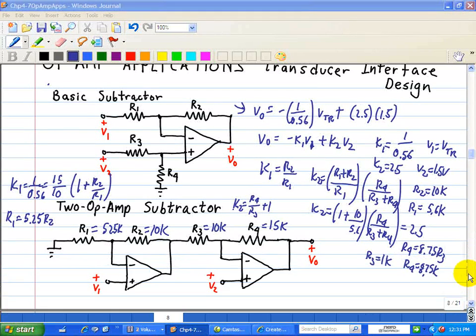Okay, in the previous video we talked about this basic subtractor in which we completed the design to implement this circuit. VO equals negative 1 over 0.56 VTR plus 2.5 times 1.5.